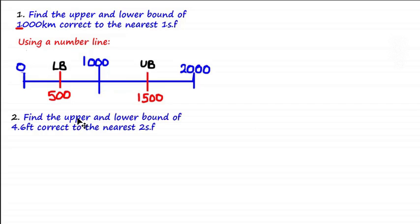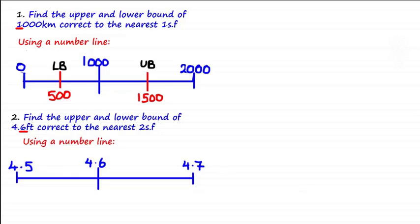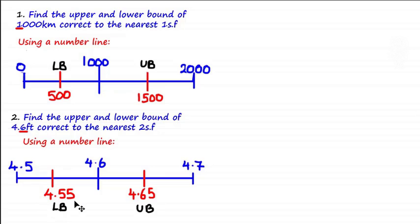Find the upper and lower bound of 4.6 feet correct to the nearest two significant figures. Using the number line with 4.6 in the middle, the second significant figure is 6. Adding 1 gives the next value up: 4.7, and subtracting 1 gives the next value down: 4.5. Taking the midpoints gives a lower bound of 4.55 and an upper bound of 4.65.